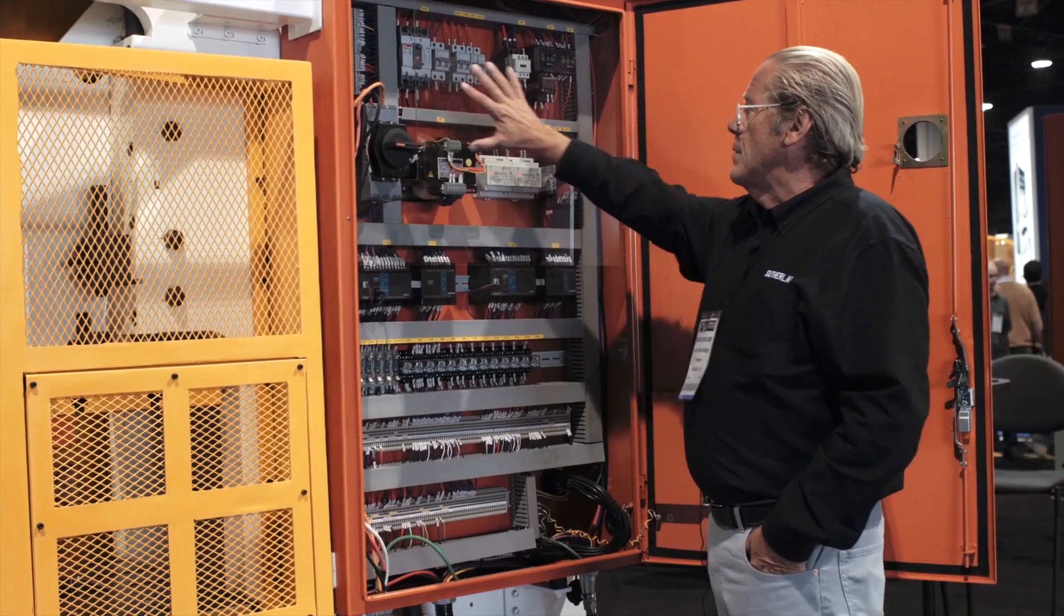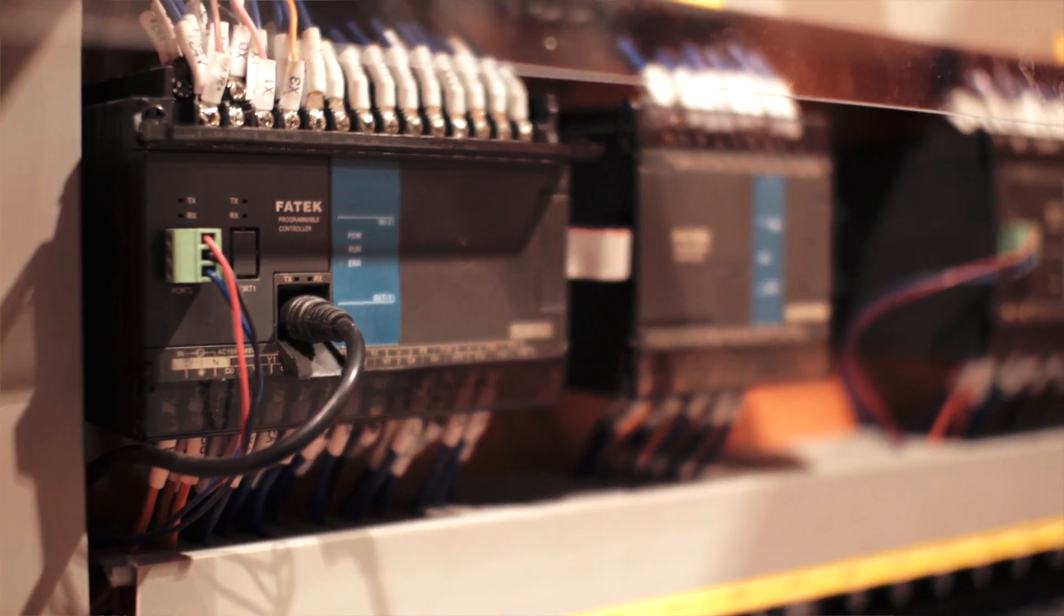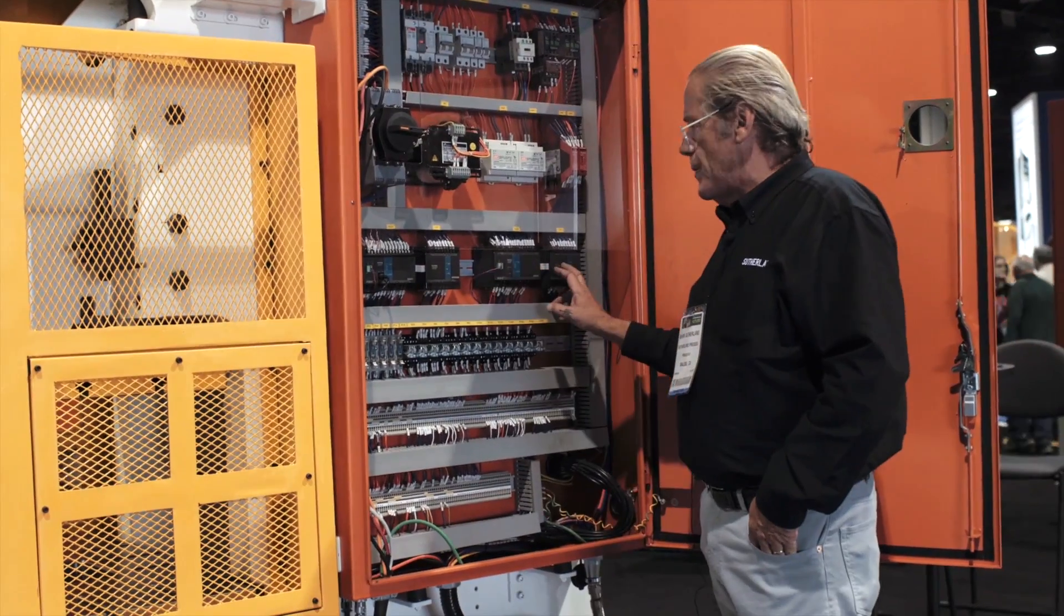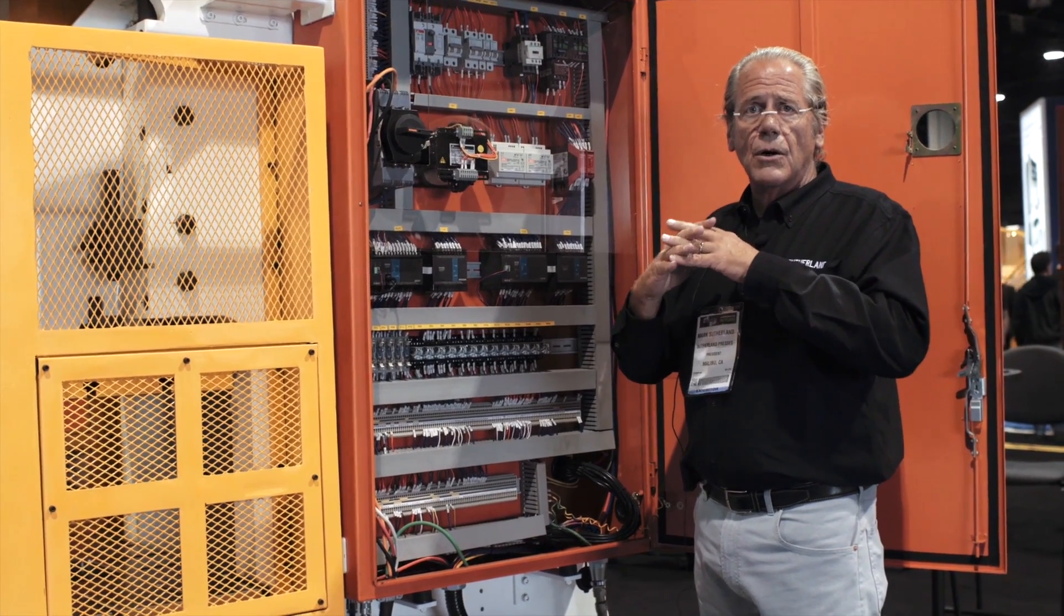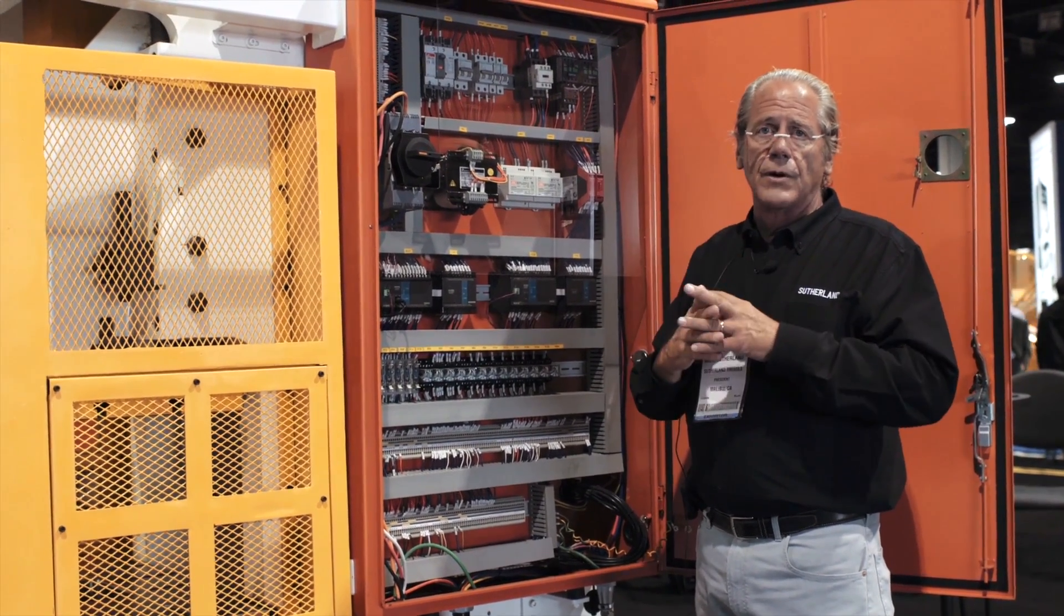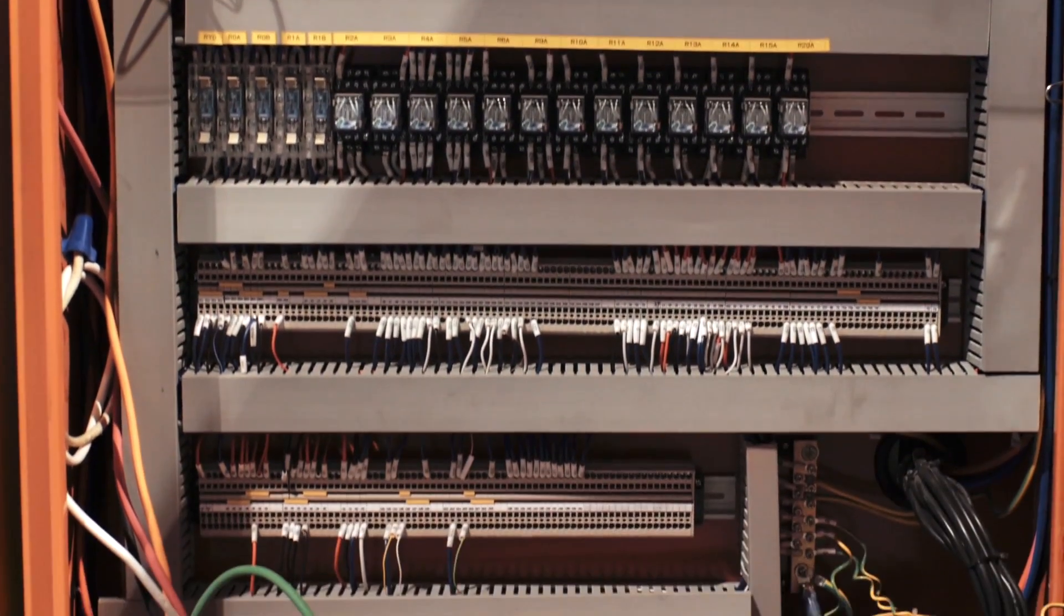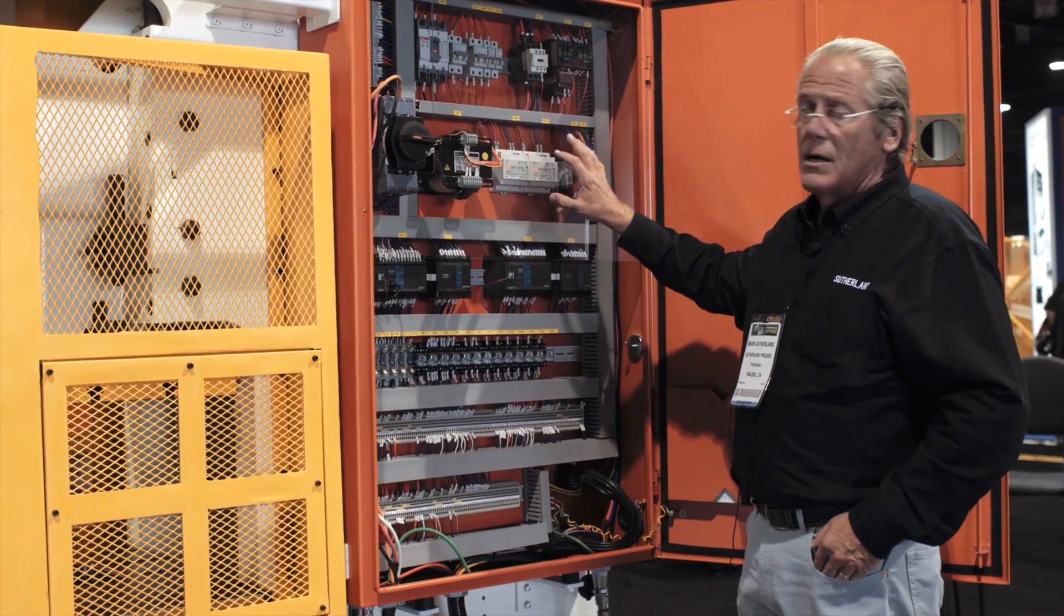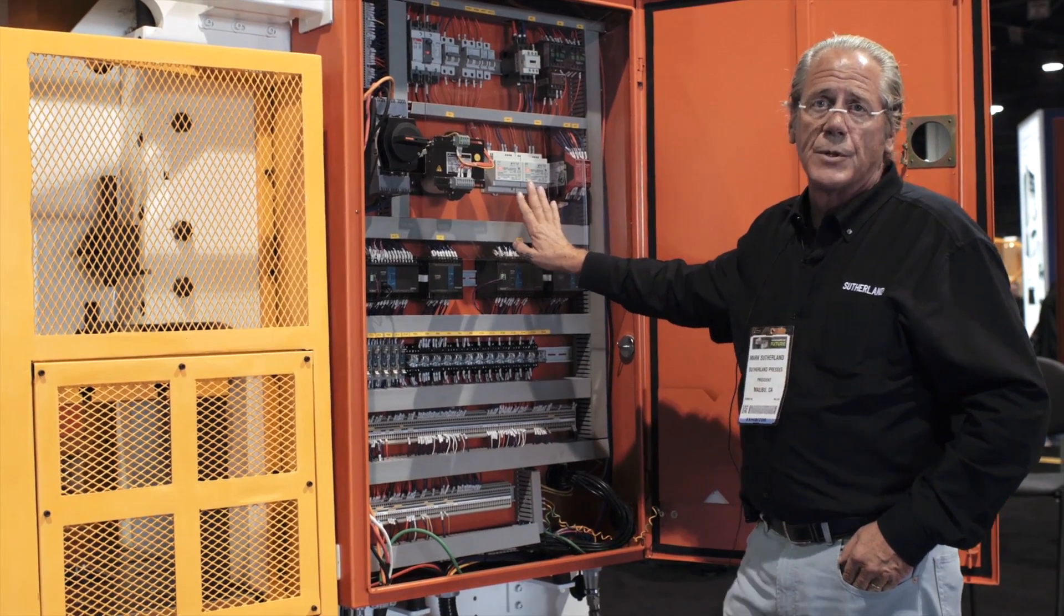High voltage on top, dual PLCs, programmable logic controllers with expansion modules. Those are cross-checking, so there's no possibility of clutch brake tripping inadvertently. Safety relays, logic relays, and then terminal strips. Very clean, done to our US standards, and meets CE requirements for Europe as well.